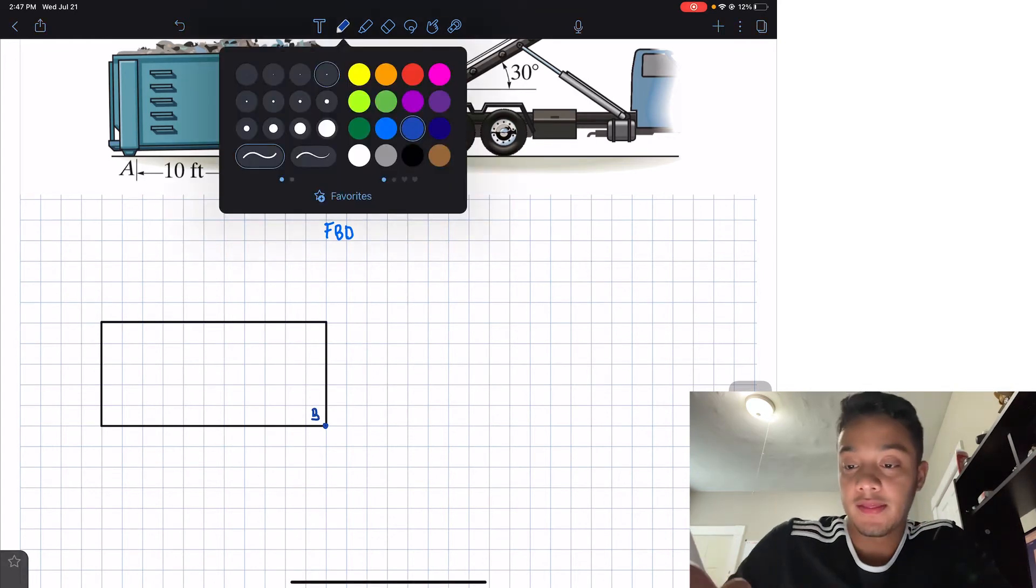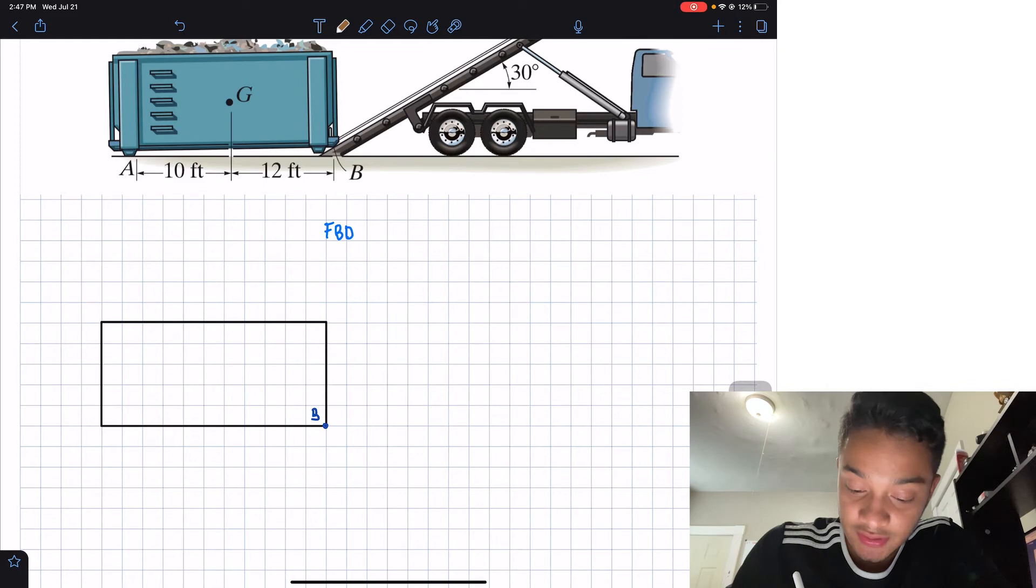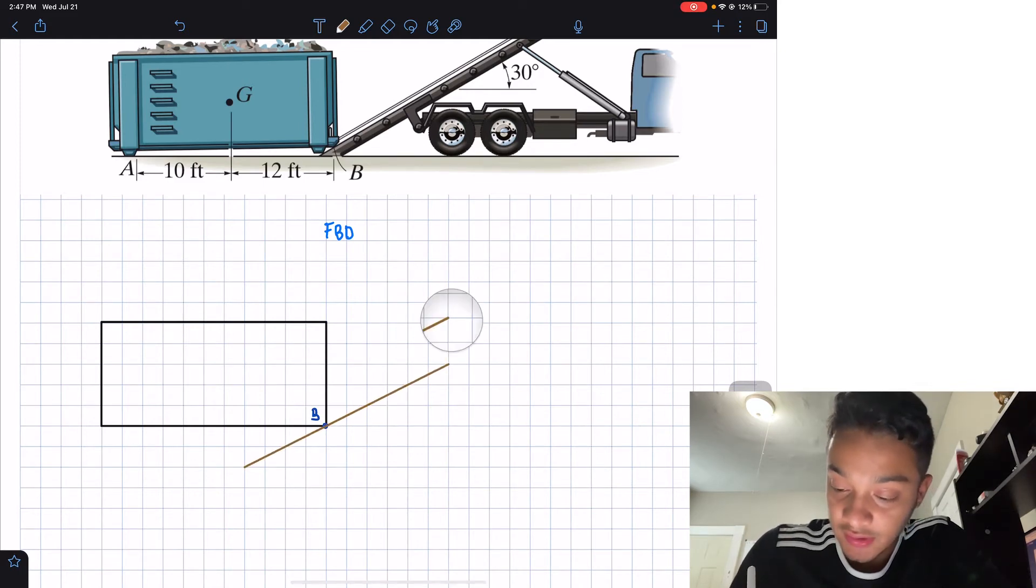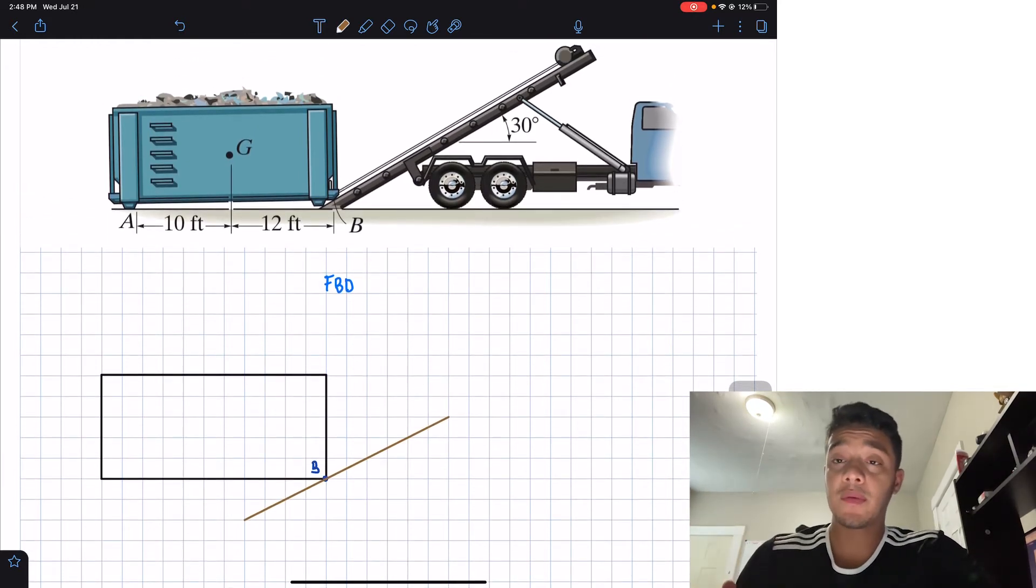Now the surface of this beam looks something similar like this. So the truck, the bed of the truck looks something like this, which is the surface of my point B, right?